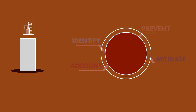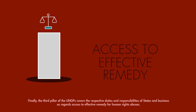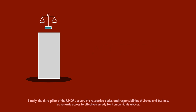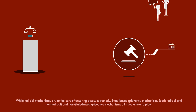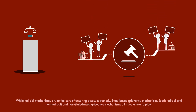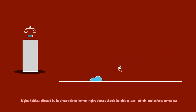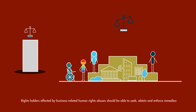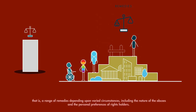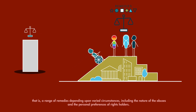Finally, the third pillar of the UNGPs covers the respective duties and responsibilities of states and businesses as regards access to effective remedy for human rights abuses. While judicial mechanisms are at the core of ensuring access to remedy, state-based grievance mechanisms — both judicial and non-judicial — as well as non-state-based grievance mechanisms all have a role to play. Rights holders affected by business-related human rights abuses should be able to seek, obtain, and enforce remedies — a range of remedies depending upon varied circumstances, including the nature of the abuses and the personal preferences of rights holders.